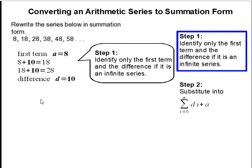And since the number of terms is infinite, we don't need to identify the number of terms. So the first term is 8. Then the difference to get from one number to the next is going to be 10. So a is going to represent 8 and d is going to represent 10.